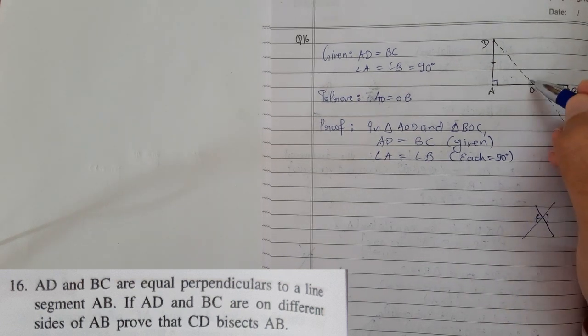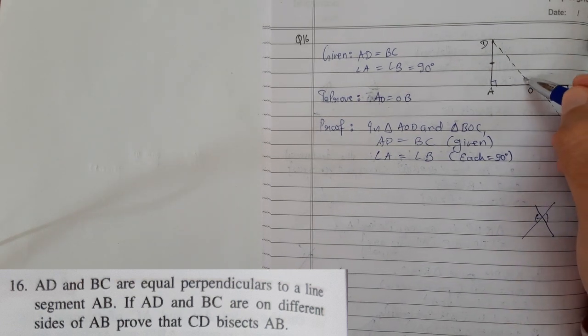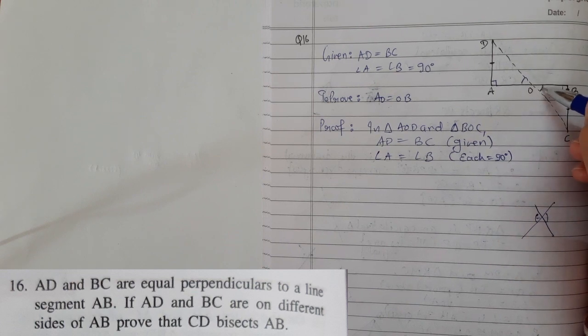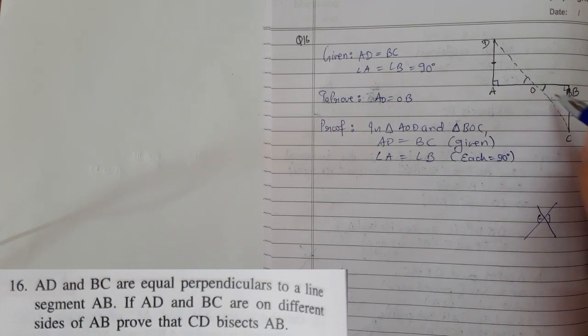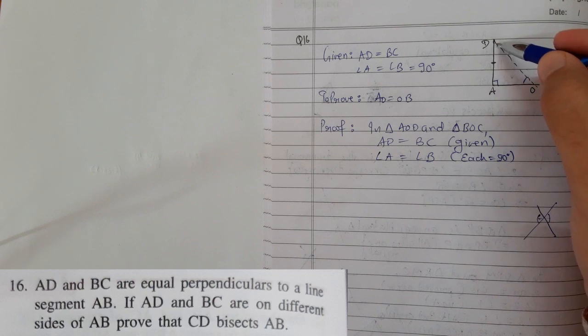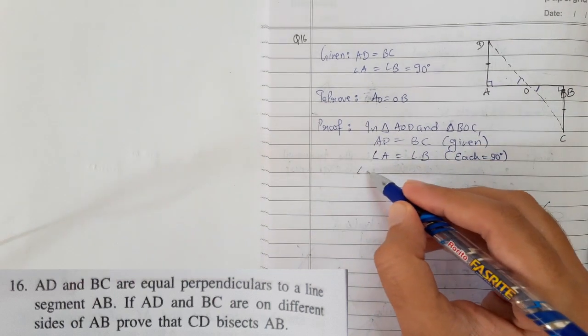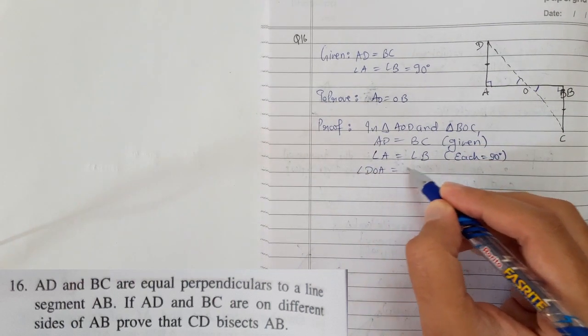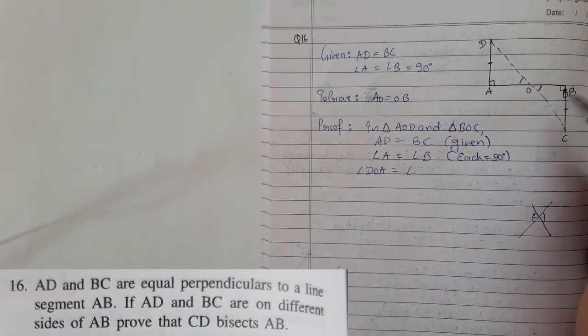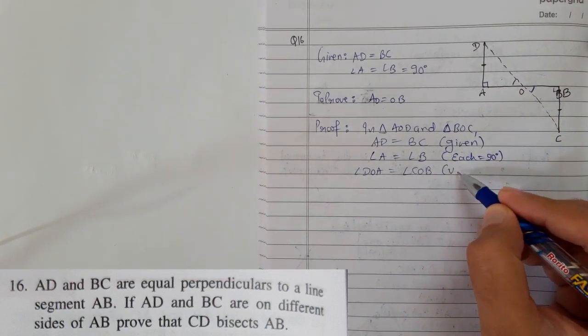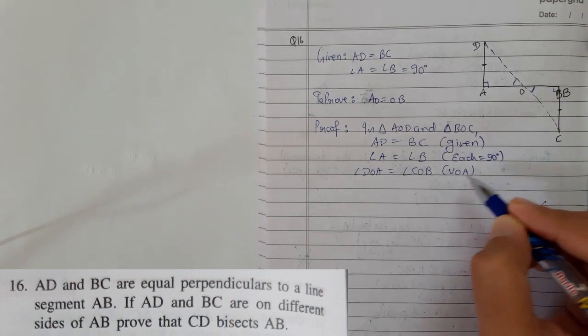They are always equal. So as you can see, this and this is making a cross. So this angle is equal to this angle. I can write the numbers as well, but right now, angle DOA is equal to angle COB. We can write vertically opposite angles are equal.